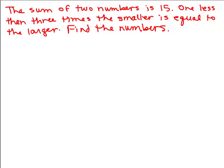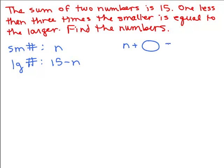There are a few ways you could do this problem, so we're going to solve it in more than one way, but just using one variable. One method is, since the sum of the two numbers is 15 and we're looking for a smaller and a larger, we could define one of the numbers as n. Since the two numbers add up to 15, the other number is going to be 15 minus n. It's because n plus something has to equal 15, so you subtract n from both sides, and that's how we know the other number is 15 minus n.